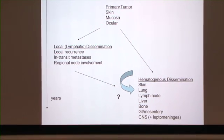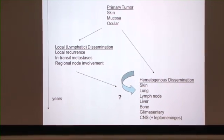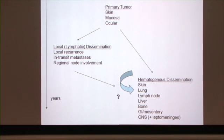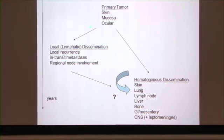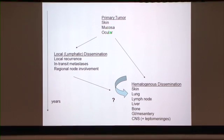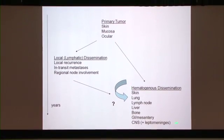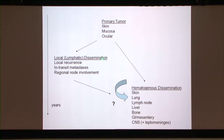Melanoma spreads in two ways. One is through the lymphatics, so it can spread to regional lymph nodes. Usually, this is the way melanoma presents first — almost always with a primary tumor, almost never with metastatic disease. The first place it usually goes is to local lymph nodes, and so you interact with your dermatologist and with a surgeon to remove this disease.